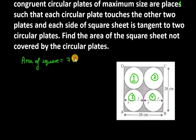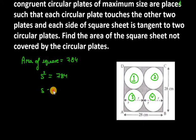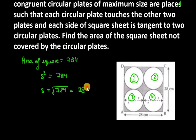The area of the square given to us is 784. The side of the square is √784, which equals 28 cm. The square root cancels with the square, so one side is 28 cm — meaning all sides are equal.